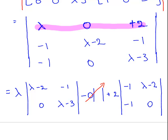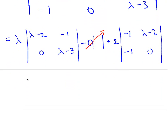I'll just check my workings in my head. So working this out, what we get is lambda times lambda minus 2 times lambda minus 3.